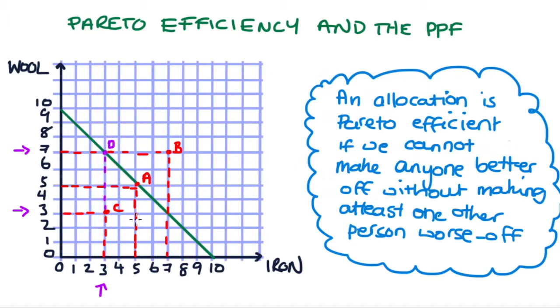Okay good, now let's do the same story except let's imagine we don't start from an inefficient point but we start from a point that's on the frontier, so a point that you would have been told in class is efficient. Now at a point like A we are producing five tons of wool and five tons of iron, but know what happens if we want to increase the amount of wool that we're producing.